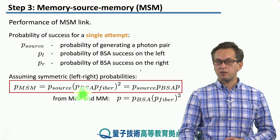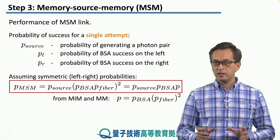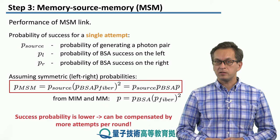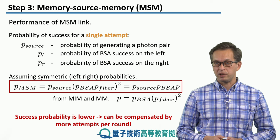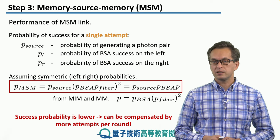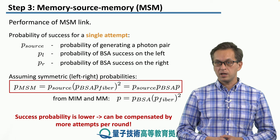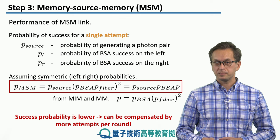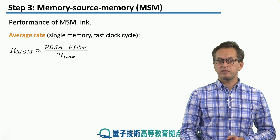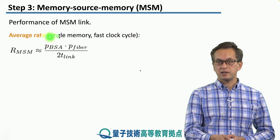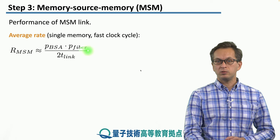We can rewrite it using our previous success probability P, which was used in the MIM and MM link. Doing this, we can immediately see that the probability of success for an MSM link is actually lower than for the MM link and for the MIM link. However, this is not such a huge issue because we can control the number of attempts used in each round simply by generating more photons at the source. The average rate for single memory and fast clock cycle is given by: P_BSA times the probability that the photon does not get lost in the fiber, divided by two times T-link.